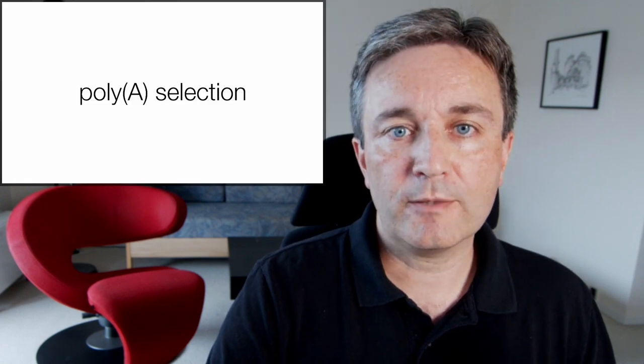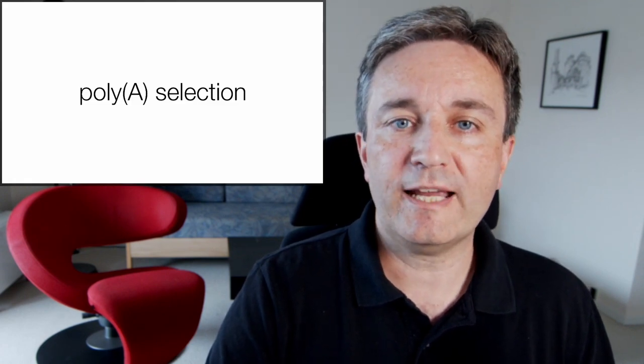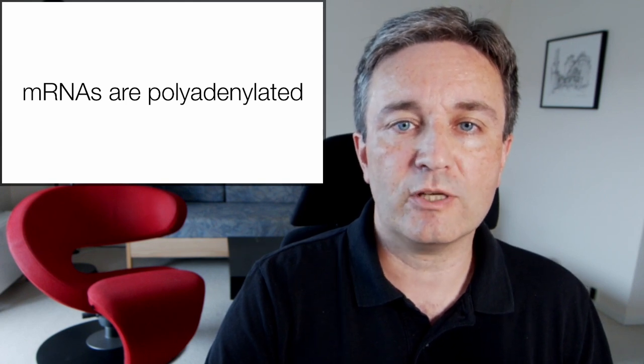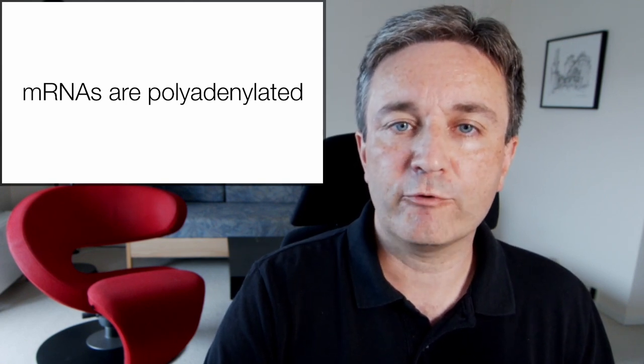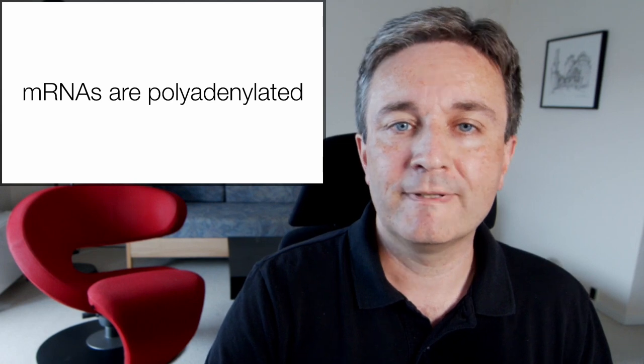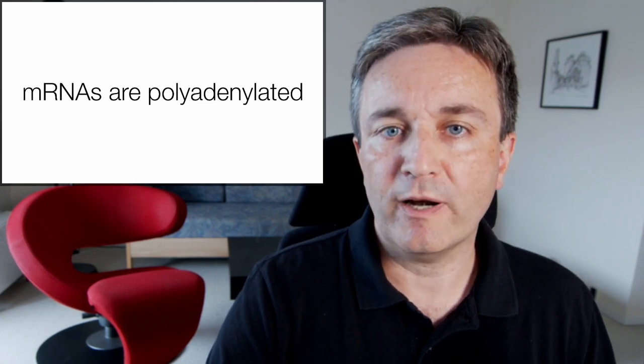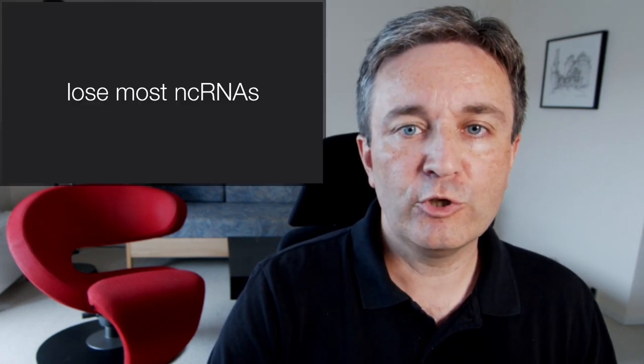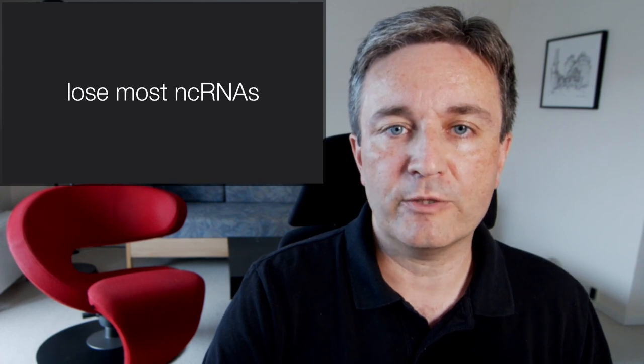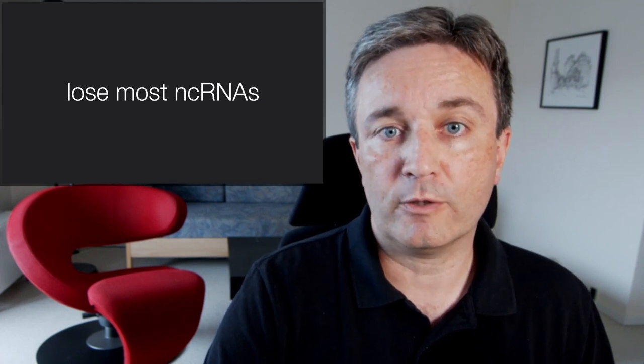The most popular approach to solve this is polyA selection. It relies on the fact that messenger RNAs are polyadenylated and can therefore be pulled down with a poly-T probe. This eliminates the ribosomal RNAs. However, you also lose most other non-coding RNAs in the process, since they too are not polyadenylated.